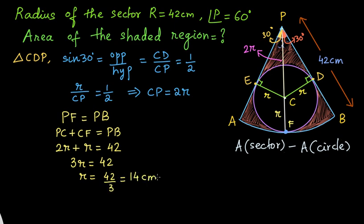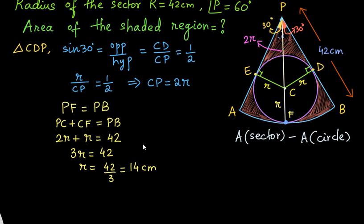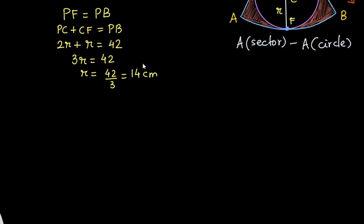Now we have the radius. We can easily find out the area of the shaded region. Area of the shaded region is nothing but area of the sector minus area of the circle.